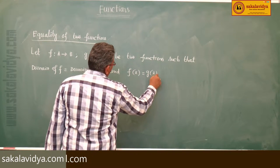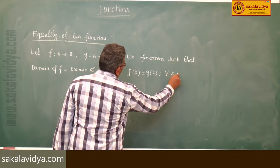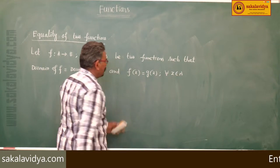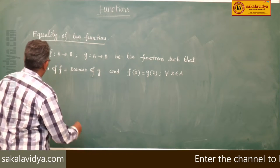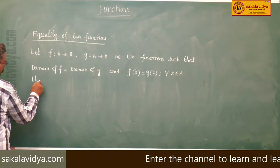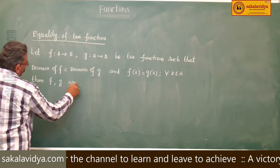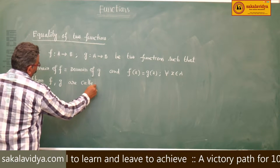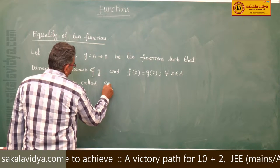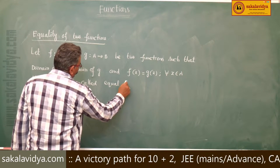And f(x) = g(x) for every x belongs to A, that means their ranges also same. Then f, g are called equal functions.